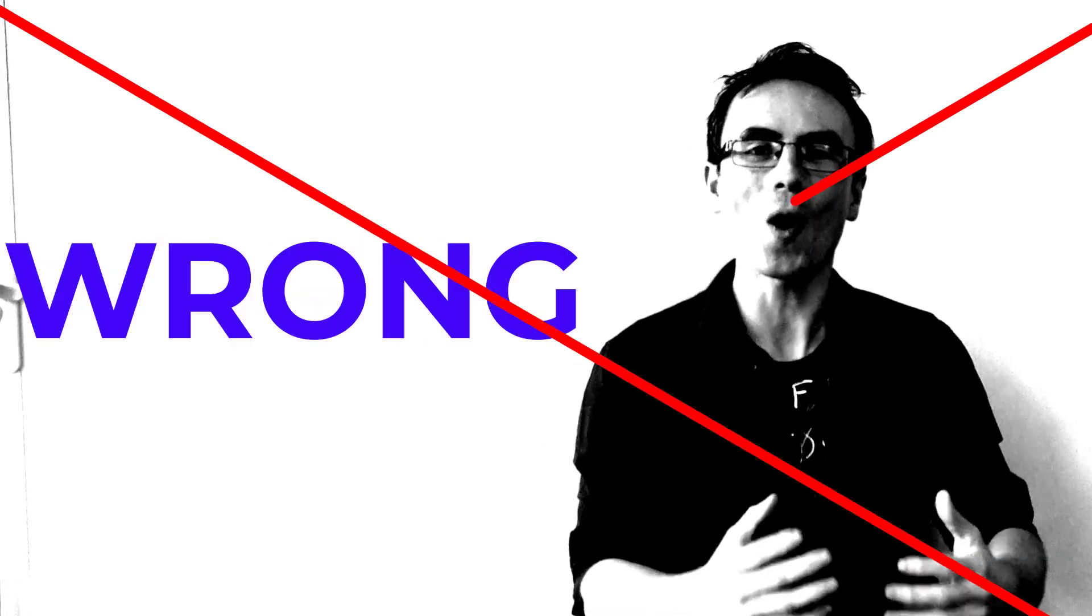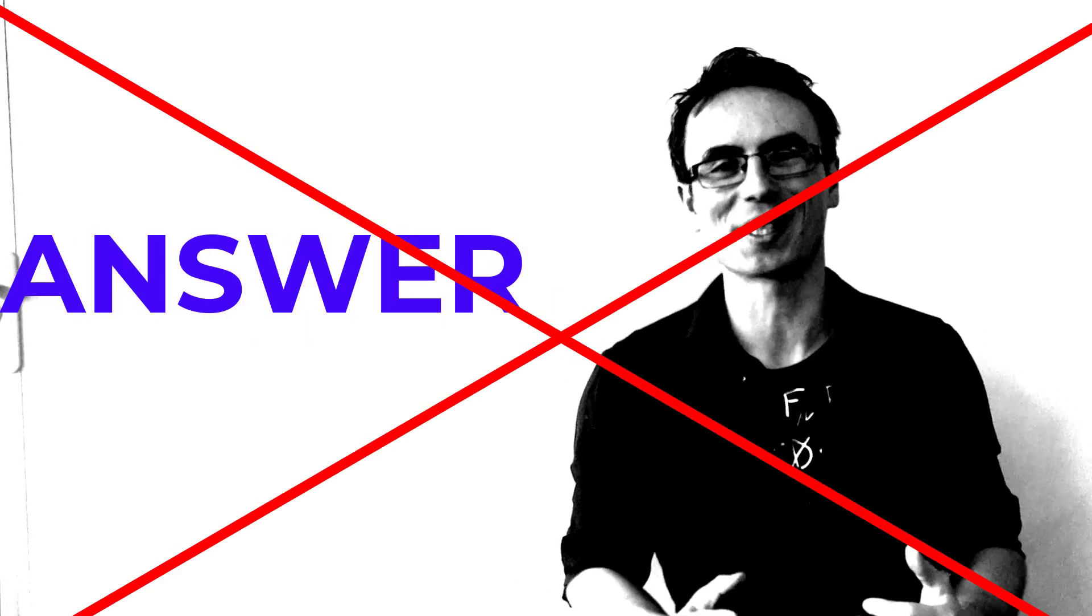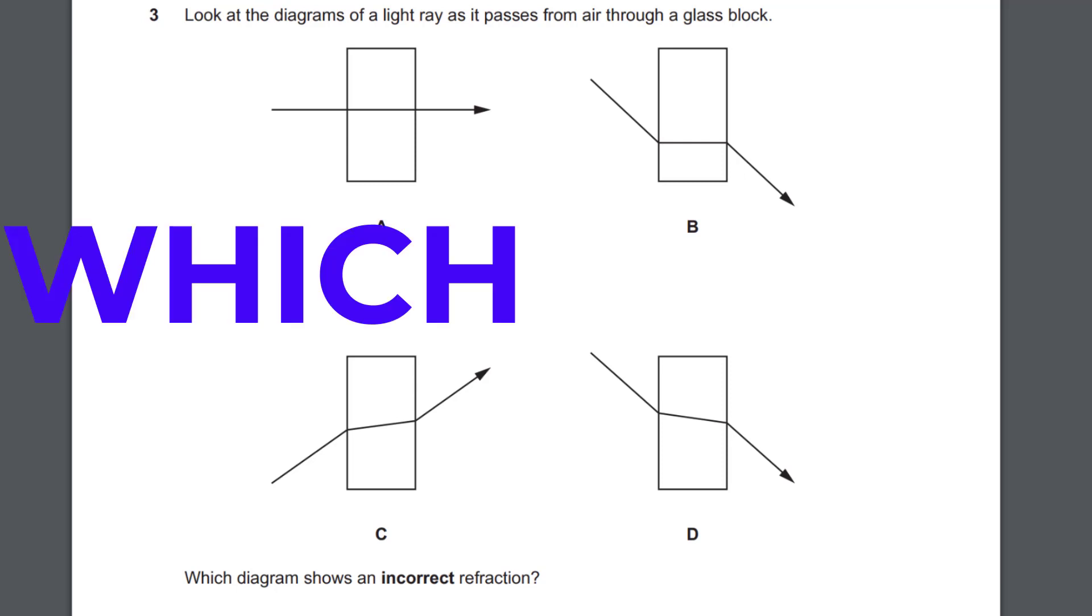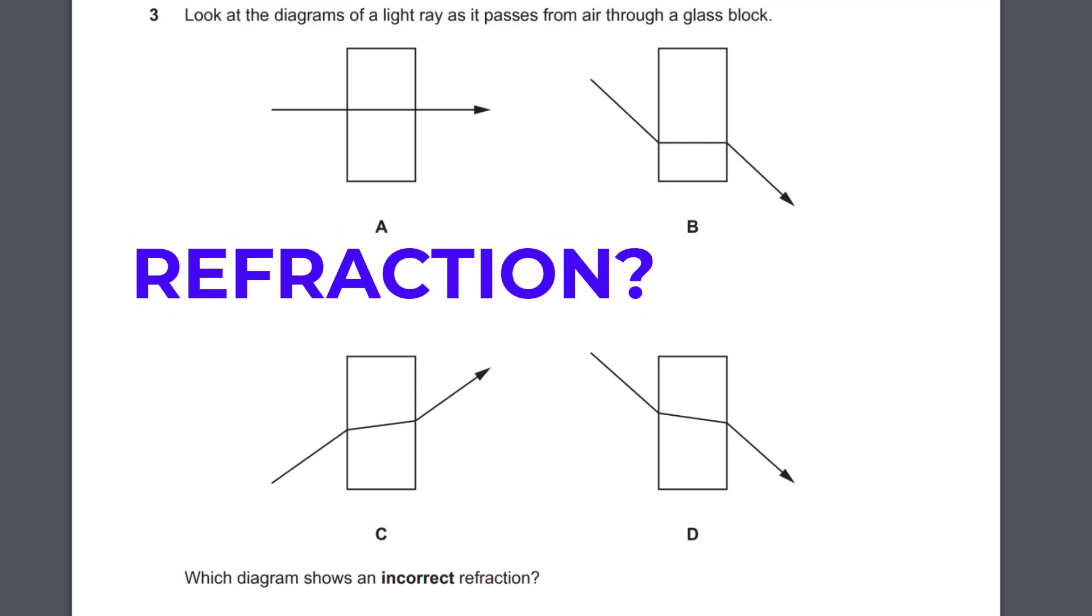Lots of candidates chose the wrong answer to this GCSE physics question. Look at these diagrams of a light ray as it passes from air through a glass block. Which diagram shows an incorrect refraction?